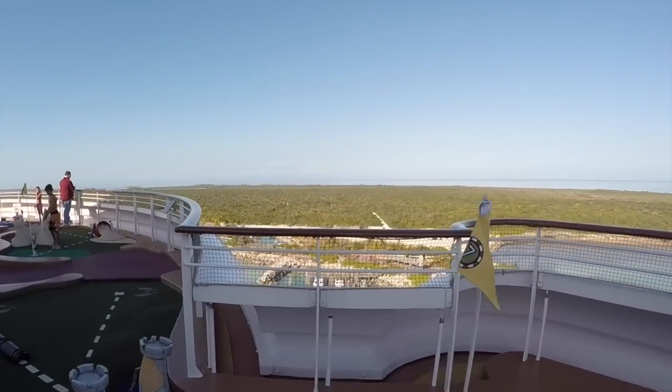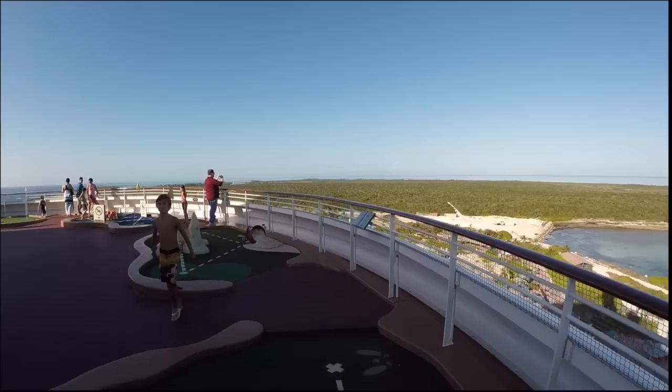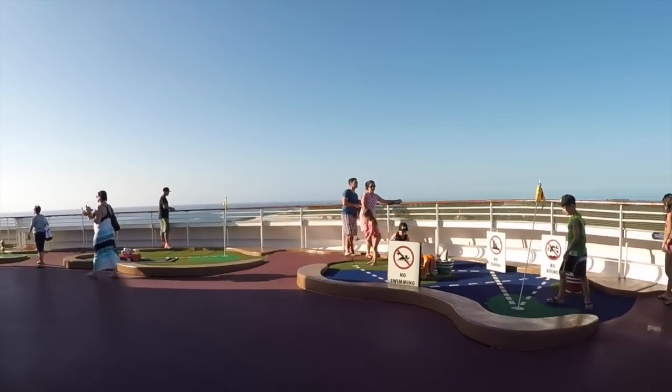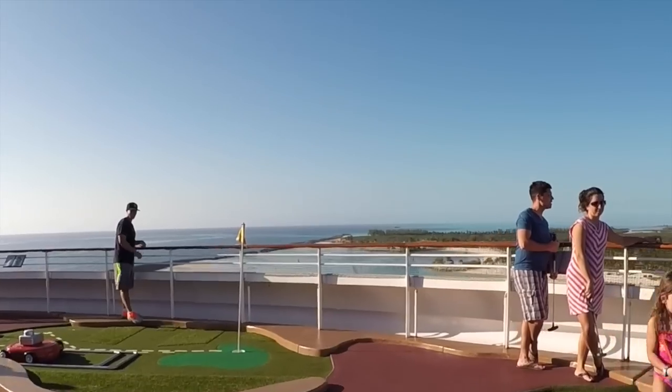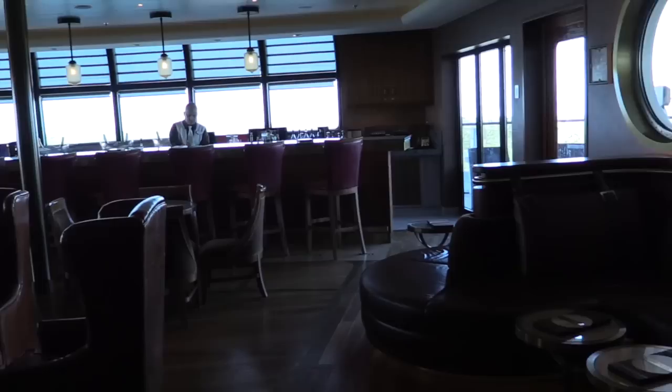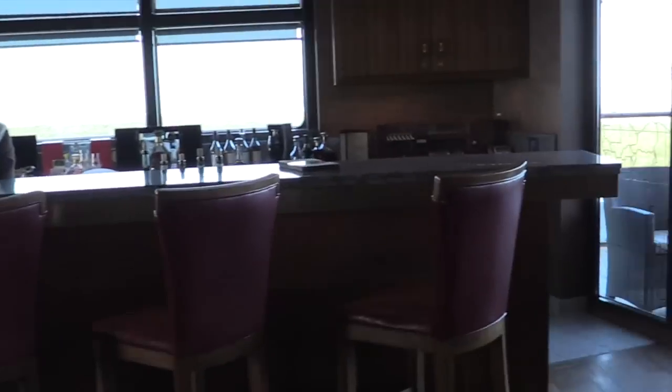So now we're at the back of the ship on the very top deck. If you want to enjoy the views from the back of the ship and maybe have a drink, two decks beneath us is Meridian Bar. So this is Meridian Bar. We're down here on deck 12, two decks below the putt putt golf course at the back of the ship.